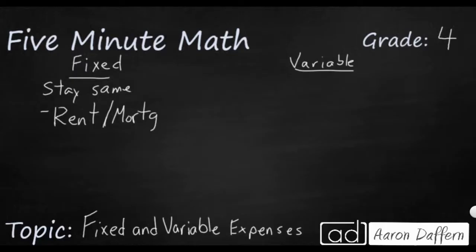Either way, typically your rent or mortgage is the same every month. You have a certain amount that you need to pay — $1,200, $1,500, $1,800 — and that stays the same month to month. It doesn't go up or down.